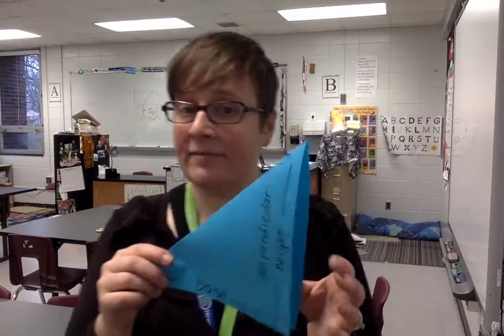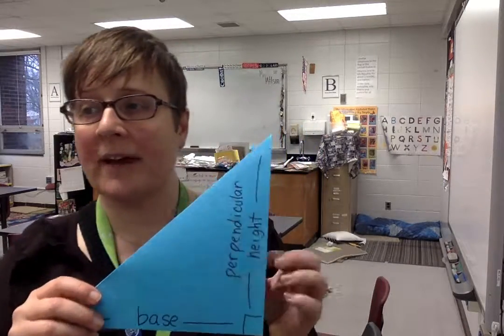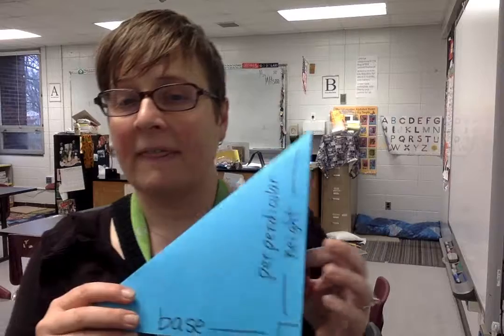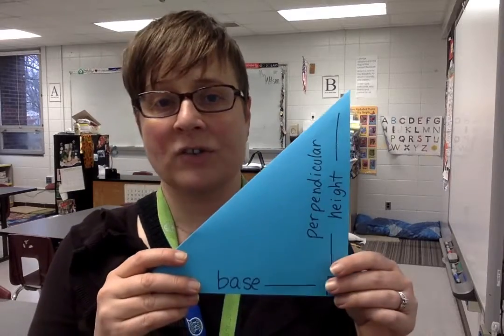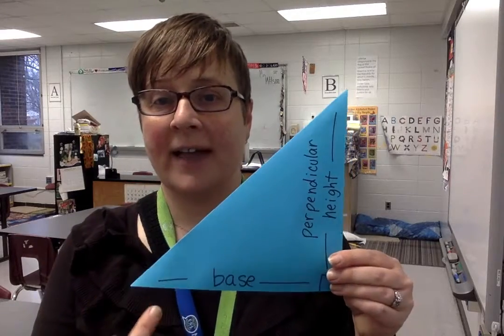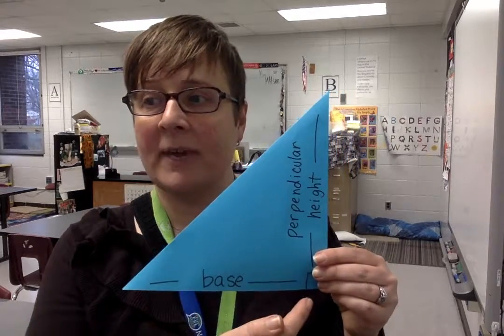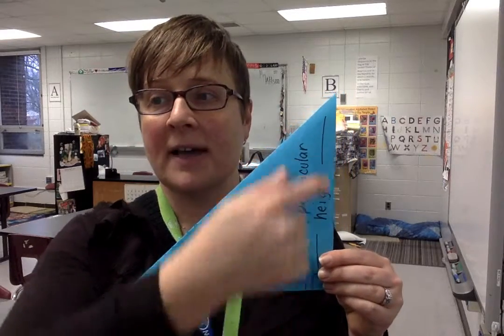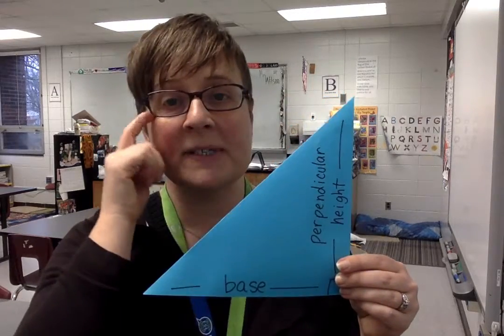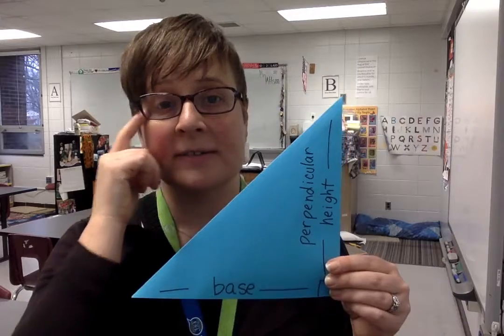Since a triangle is half of a quadrilateral, the area of a triangle is half of the base times the perpendicular height.